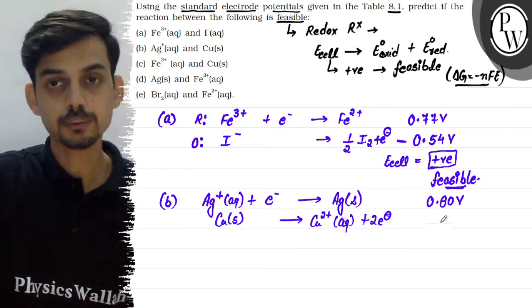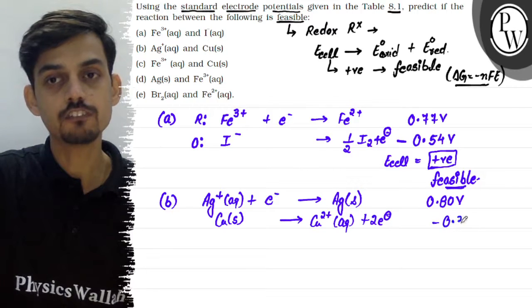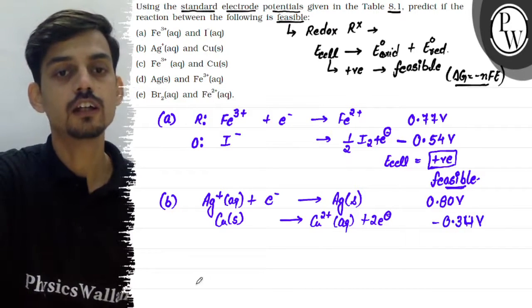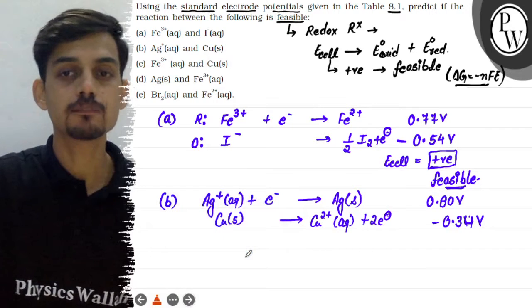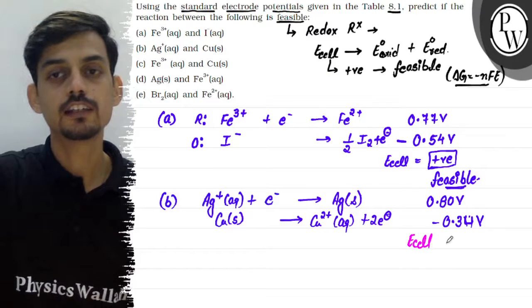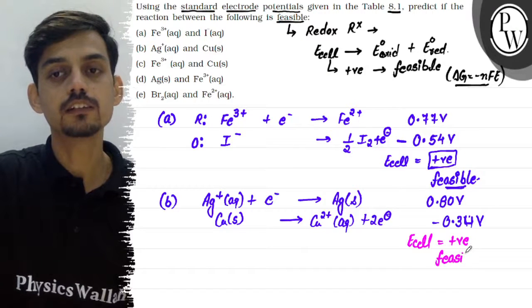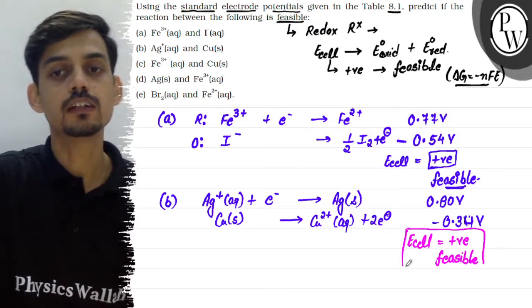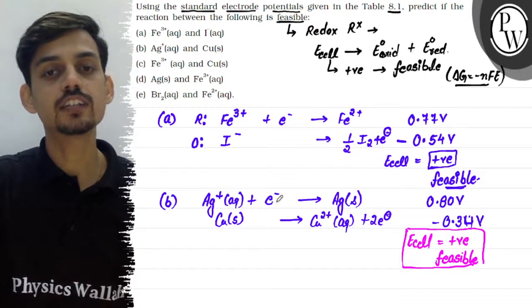And for copper, it will get oxidized into copper 2+. And here the reduction potential is minus 0.34 volt. In dono ka jo summation hai, yaani ki jo humare paas E cell aayega, that will again come out to be positive. And that also indicates the given reaction between the pair is also feasible. This pair reaction is also feasible.